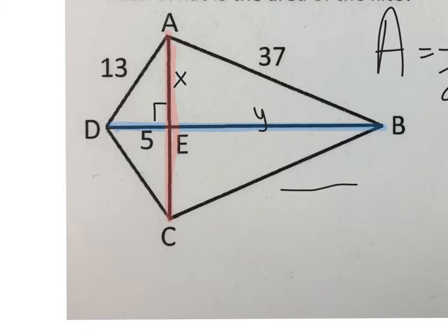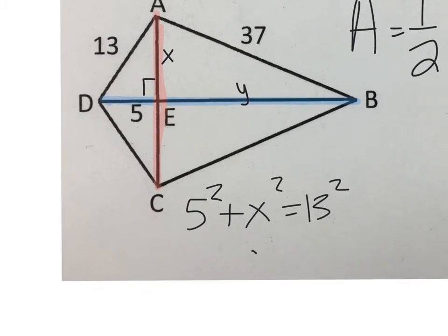From our first right triangle, which is triangle ADE, we know that 5 squared plus x squared equals 13 squared. So doing this out, we get x equals 12. So this much is now 12, which means...